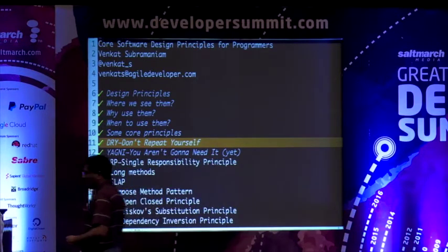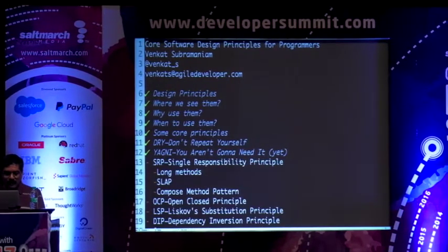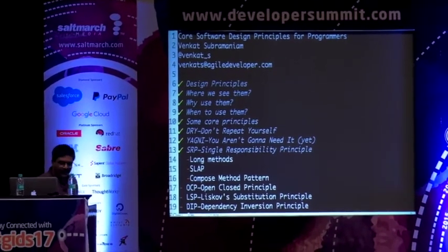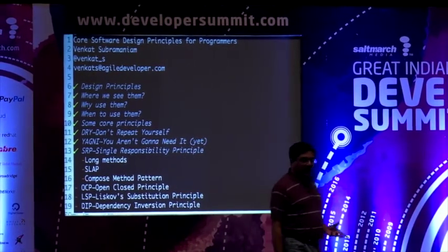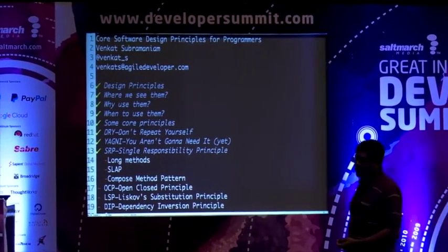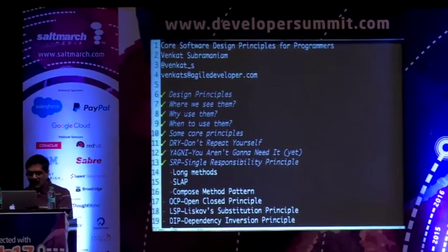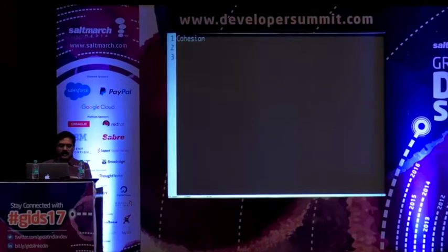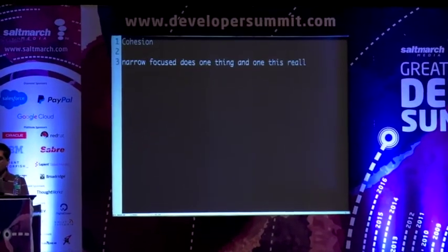One principle I would argue is probably the most important is the Single Responsibility Principle. It says a module of code — whether it's a function, class, component, or system — should focus on one thing and one thing only. This is another name for cohesion. Cohesion is where a piece of code is narrow, focused, and does one thing really well.